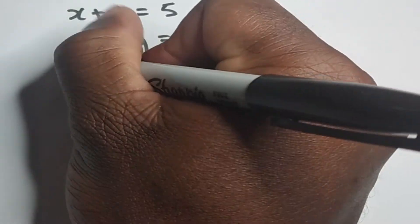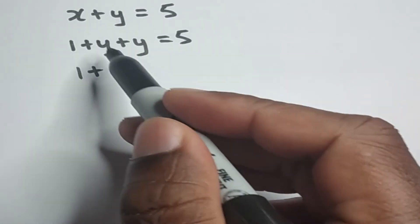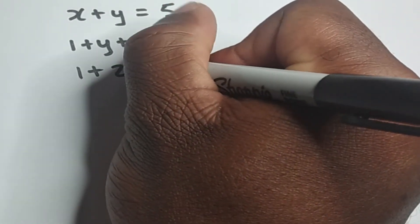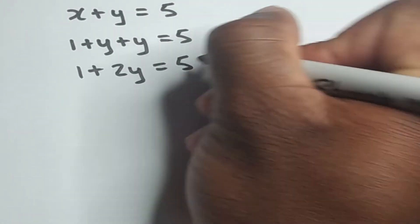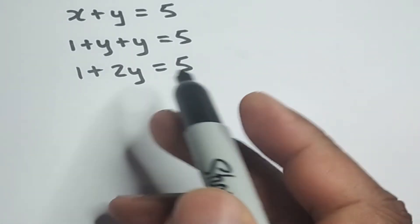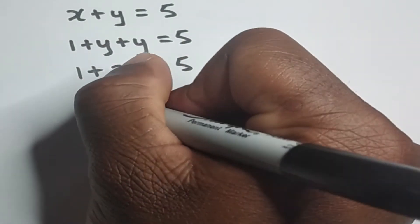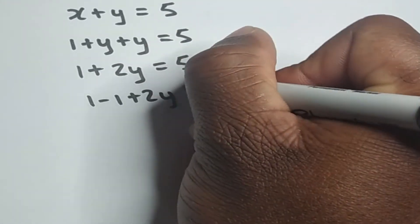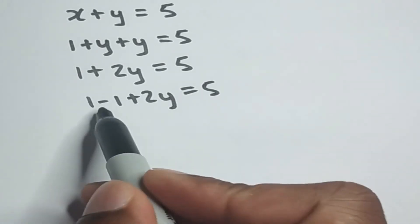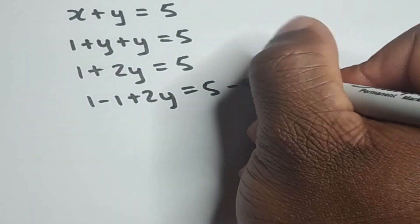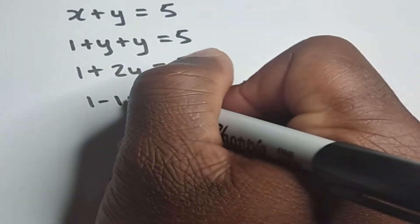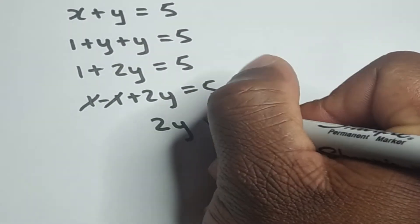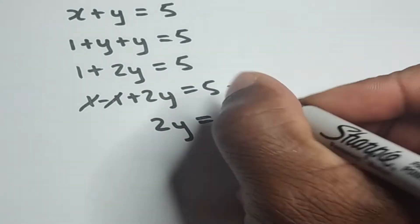Now let's see what we can do. We can group like terms — they're already grouped — so y plus y gives us two y. So we have one plus two y is equal to five. Now we can subtract one from both sides to get rid of this one, so we have two y is equal to five minus one.